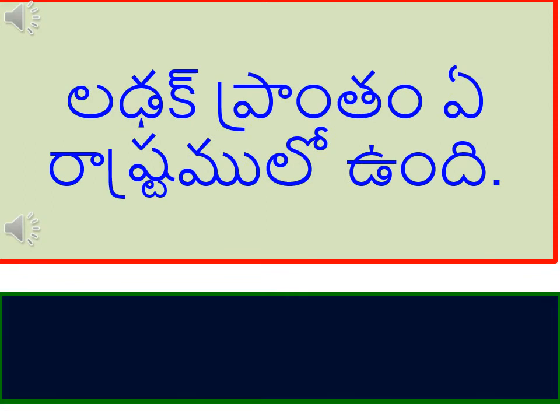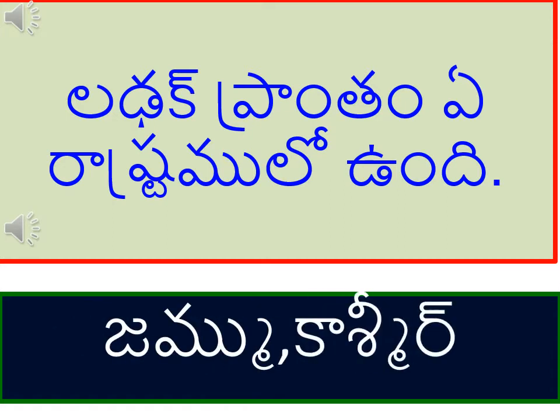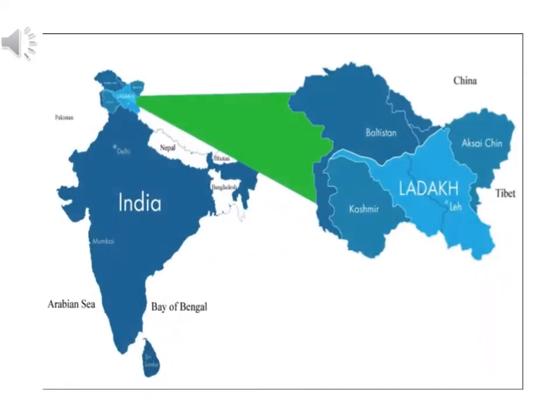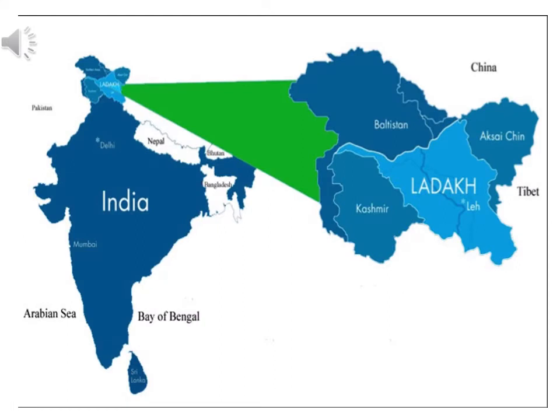લળાક પ્રાંતમ એ રాష્ટ્ర મ્લો કંદી. જમ્મુ કાશ્મીર જમ્મુ કાશ્મીર મેપ ઇમેજ.